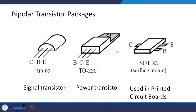Commercially available transistors include the TO-92 package with collector, base, and emitter ports. Power transistors for power applications come in the TO-220 package with base, collector, and emitter ports. There are also surface-mount type transistors for printed circuit boards, such as the SOT-23, which also has collector, base, and emitter terminals.